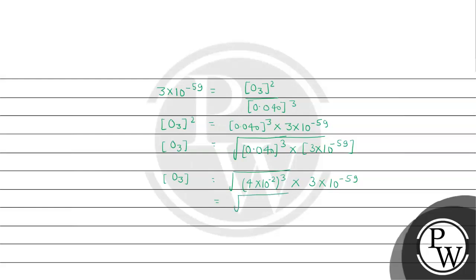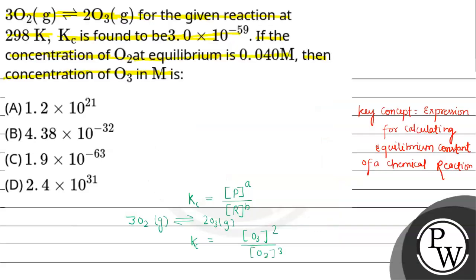On calculating, this comes as 64 × 10⁻⁶ multiplied by 3 × 10⁻⁵⁹, giving us the result under the square root. The concentration of O₃ at equilibrium comes out as 4.38 × 10⁻³² molar. So from the given options, option number B will be the correct answer. Thank you, I hope it is understandable.